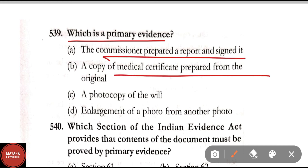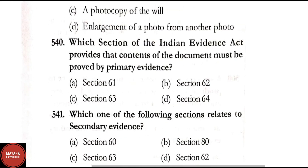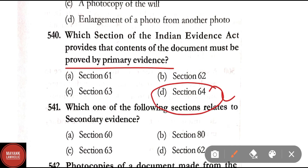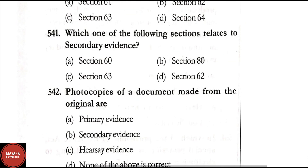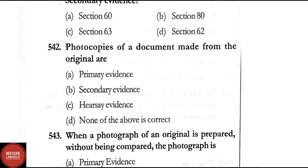Question 539: What is primary evidence? Option A: the commissioner prepared a report and signed it; Option B: a copy of a medical certificate prepared from the original; Option C: a photocopy of the will; Option D: enlargement of a photo from another photo. Correct answer is Option A — the commissioner prepared a report and signed it is primary evidence. Question 540: Which section of the Indian Evidence Act provides that contents of a document must be proved by primary evidence? Correct answer is Option D — Section 64. Question 541: Which section relates to secondary evidence? Correct answer is Option C — Section 63.